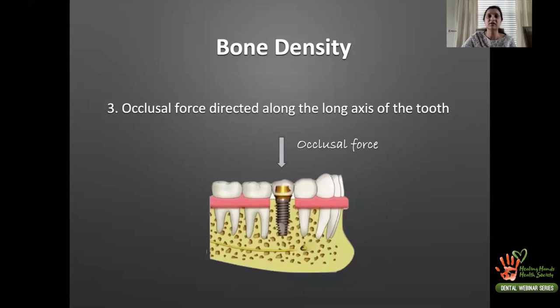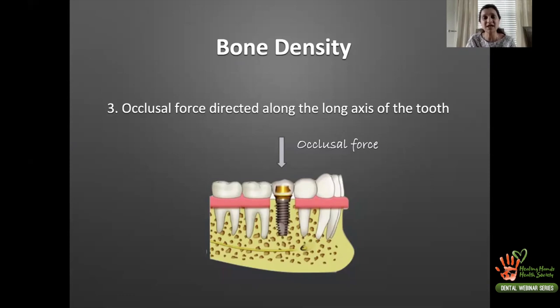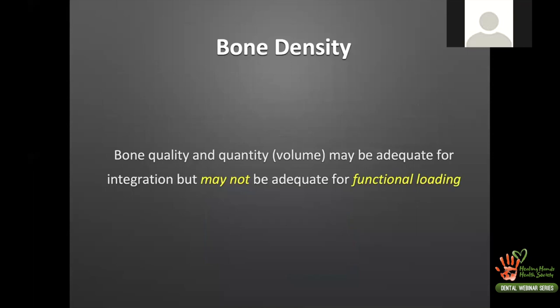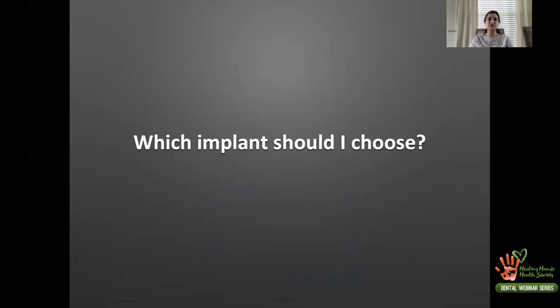Bone quality and quantity may be adequate for integration but not for functional loading. When selecting the implant — considering design, length, and diameter — consider whether it is immediate or early placement (choose tapered and longer), the location (anterior = narrower, posterior = wider), bone quality, anatomical limitations, and which tooth is being replaced. For a molar you choose a wider implant; for a lateral incisor you choose a narrower, thinner implant.